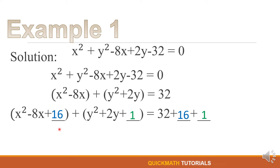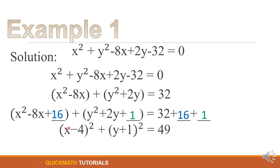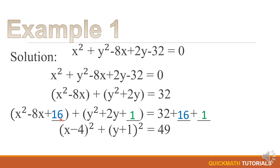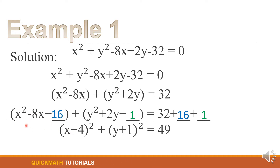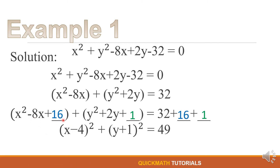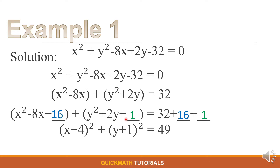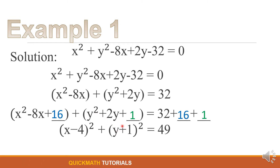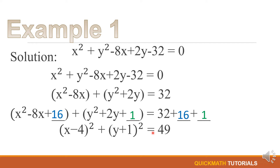For our next step we will factor the x group and the y group. To find the factors, get the square root of x² which is x, copy the sign of the middle term — negative — and the square root of 16 is 4, then put a square. For the y group, get the square root of y² which is y, copy the sign of the middle term — positive — and the square root of 1 is 1, then put a square.